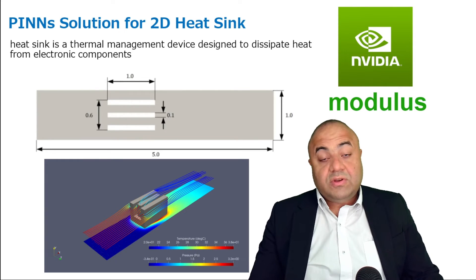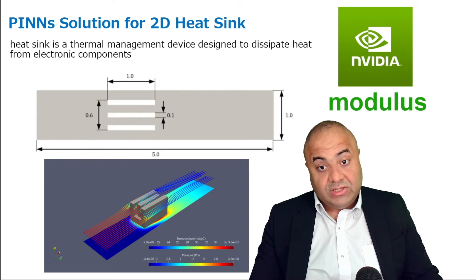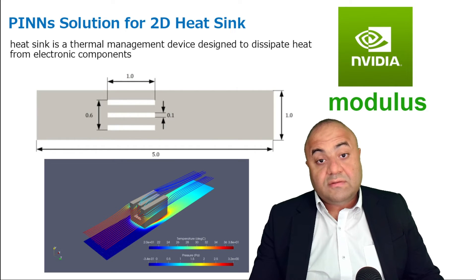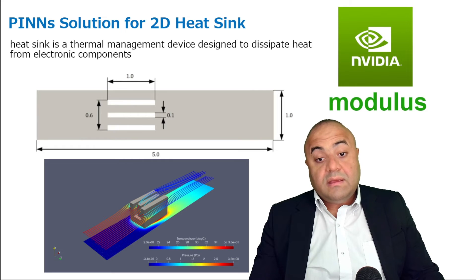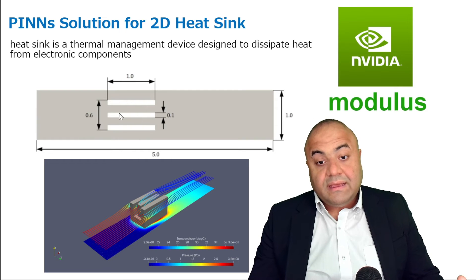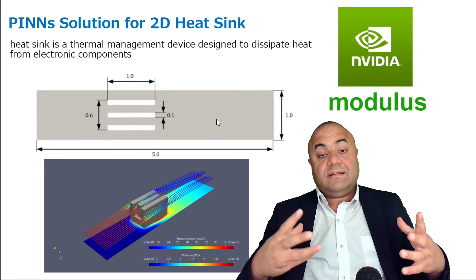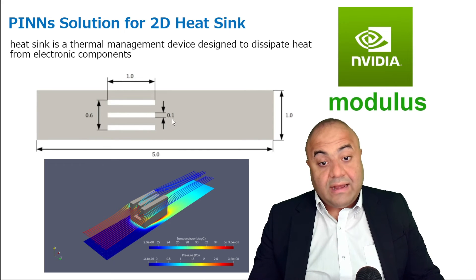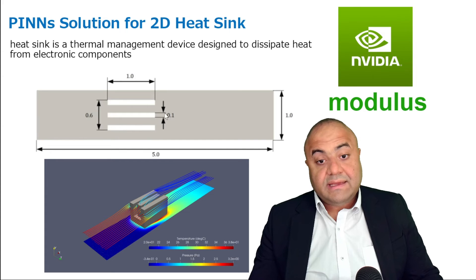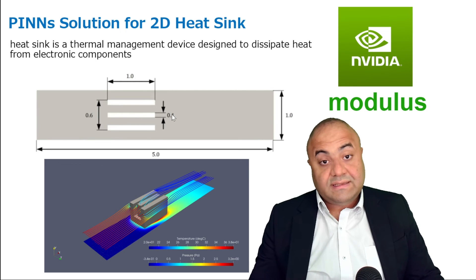After that, we will go to a more complex problem involving multiple governing equations — the 2D heatsink problem. In this problem, a flow goes from left to right and impacts a heatsink that has a higher temperature than its surroundings, heating up the flow. We will calculate the flow field around this heatsink as well as the temperature of the fluid going into and out of the heatsink.